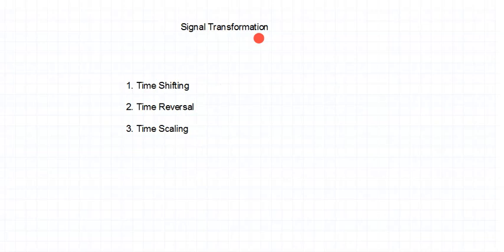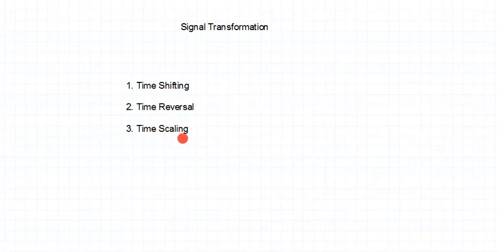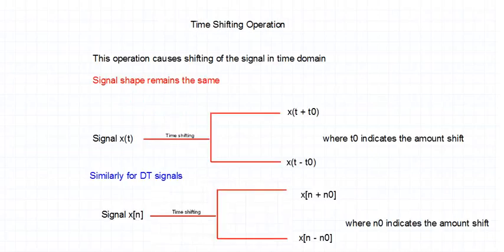What kind of modification? We are going to do shifting of the signal, reversal of the signal, and scaling of the signal. This is called signal transformation. These shifting, reversal, and scaling are done on the time axis, and that's why the names are time shifting, time reversal, and time scaling. Now let us look at each of them one by one.